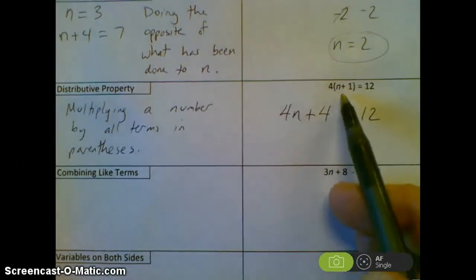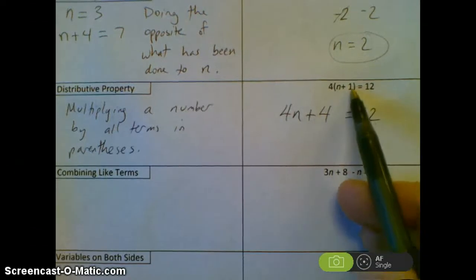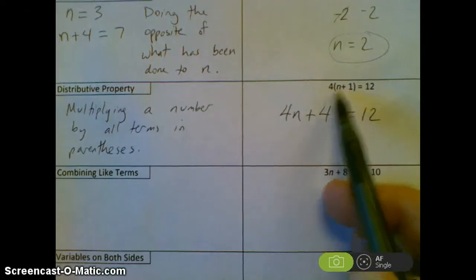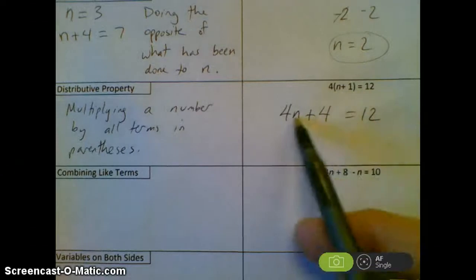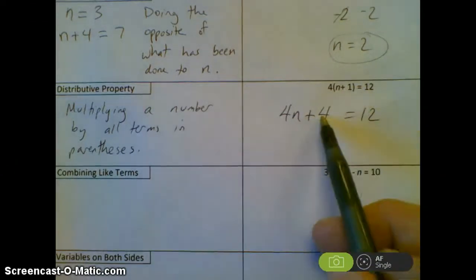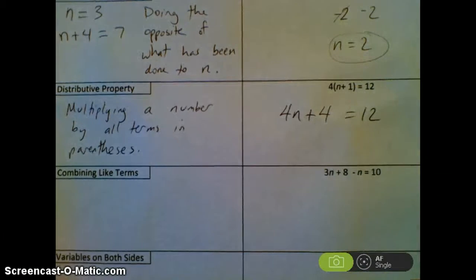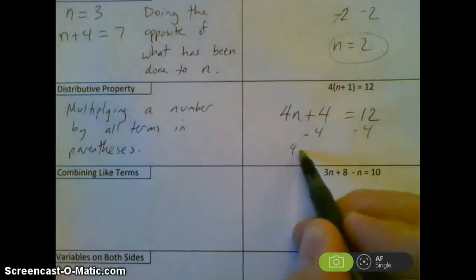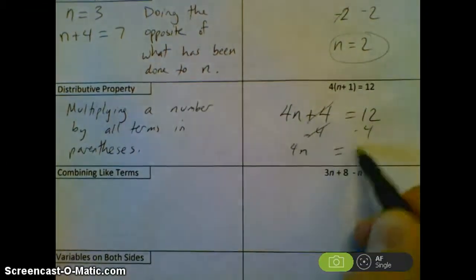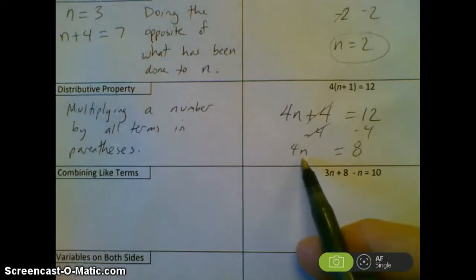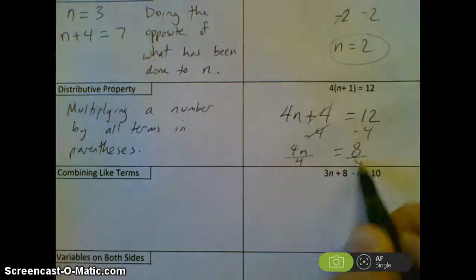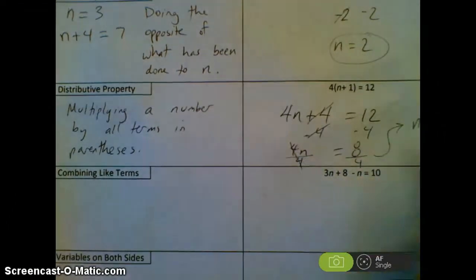The person who made this took n, added 1 to it, then multiplied that whole thing by 4. So to solve it, we distribute the 4 first: 4 times n gives 4n, 4 times 1 gives 4, equals 12. Now subtract 4 from both sides, leaving 4n equals 8. Since this is 4 times n, the inverse operation is dividing by 4, so n equals 2.